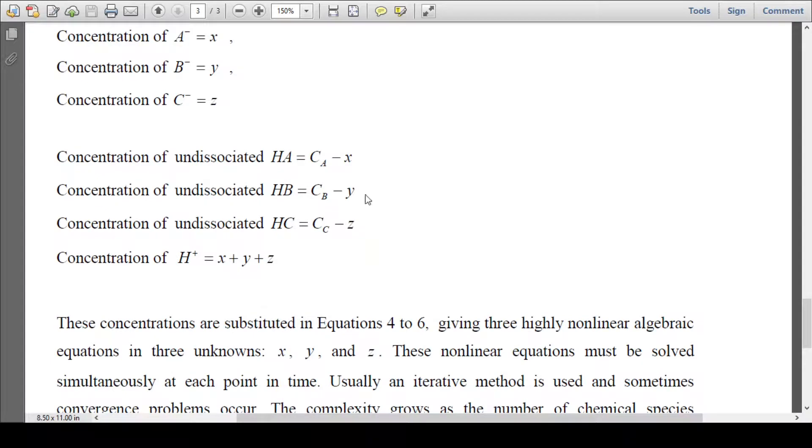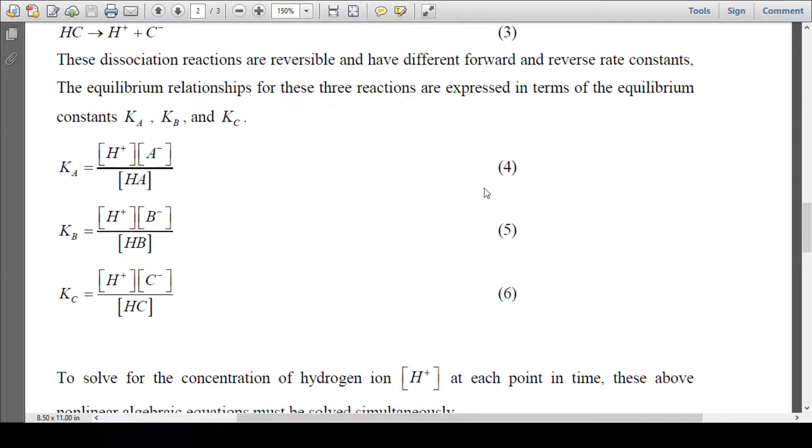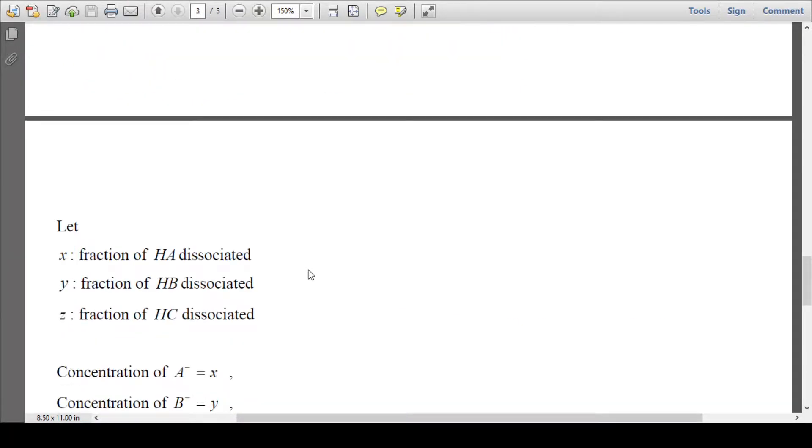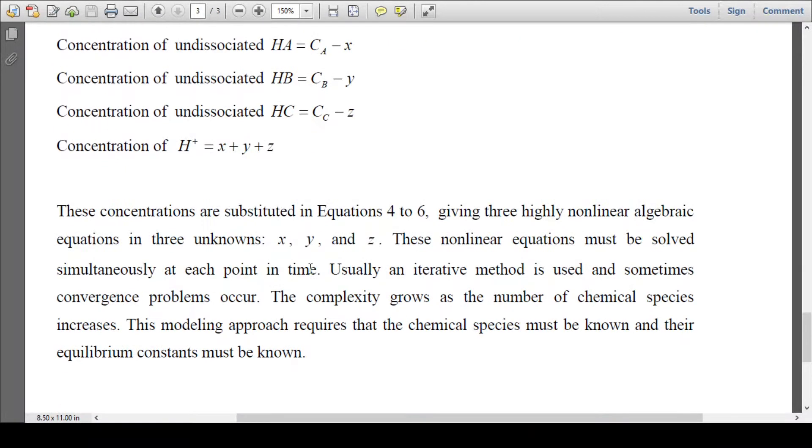Now all these concentrations would be substituted back into equations 4, 5, and 6. These need to be solved by iterative techniques. Total H+ ion will be X plus Y plus Z.